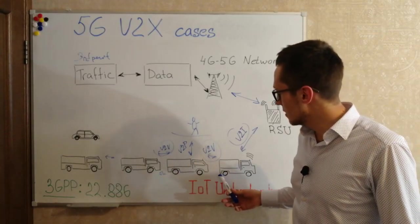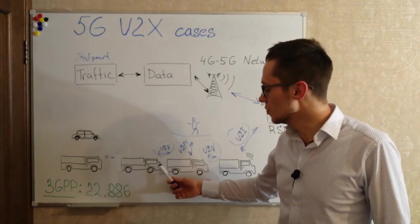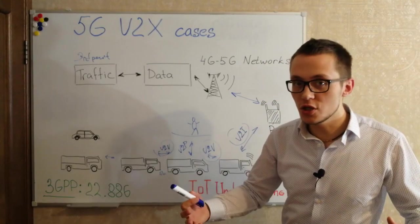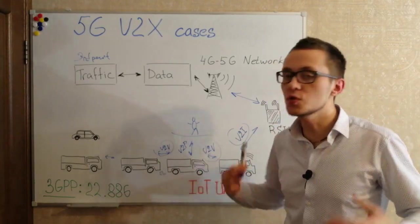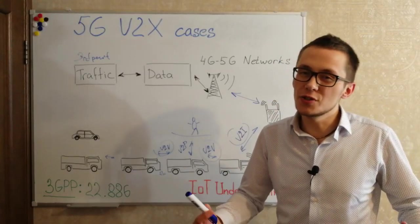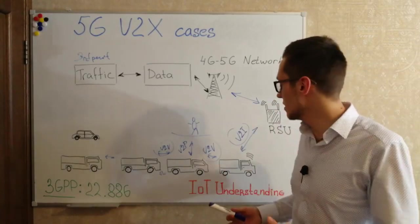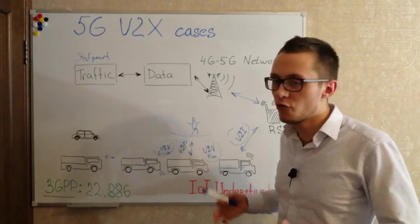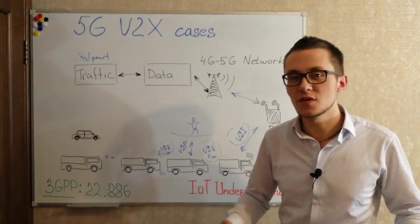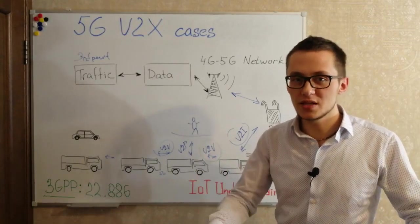Cars can communicate with each other via vehicle-to-vehicle interfaces and protocols. The main reason why we need such communication between cars is to reduce the number of traffic jams, to make our roads more optimized, more effective, and a safer place.